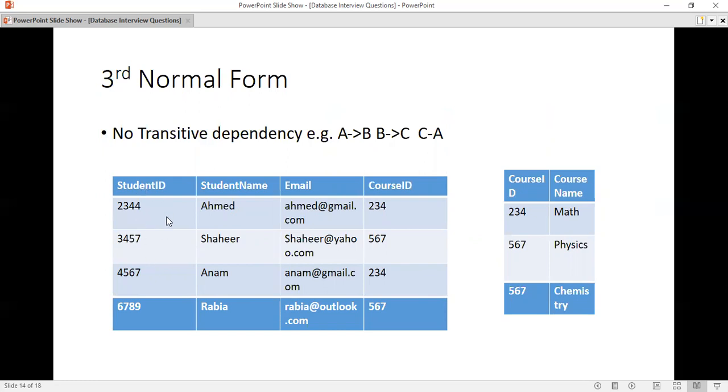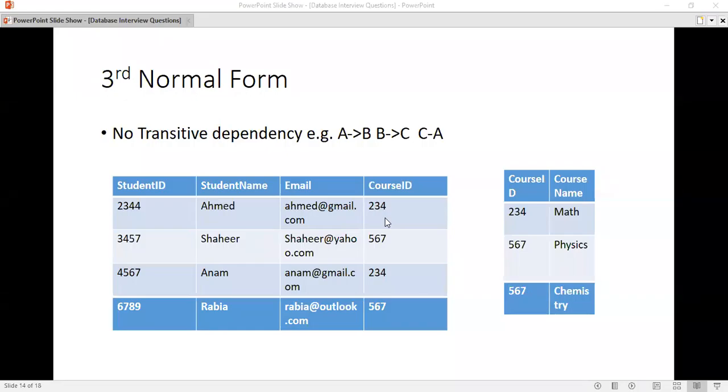We can see that one student can be enrolled in multiple courses and multiple courses can come to one student. If I have to resolve this, I will resolve many-to-many, so we will create a third table, which we also call pivot table.